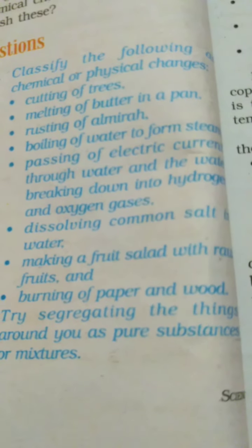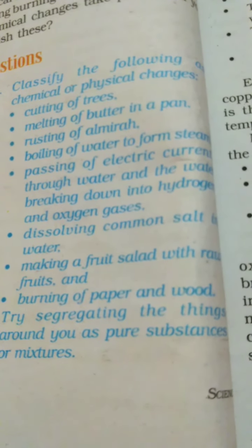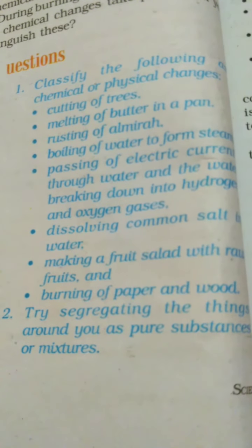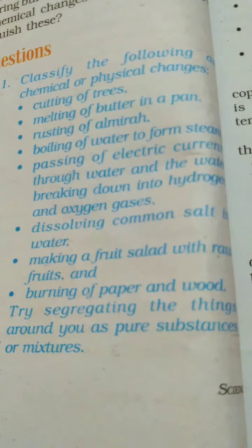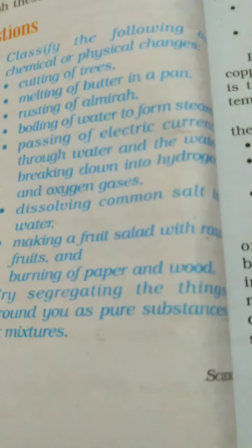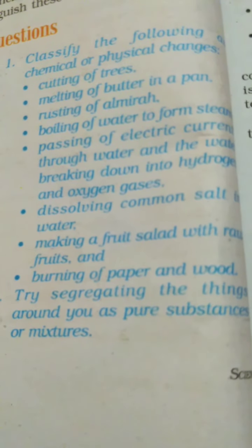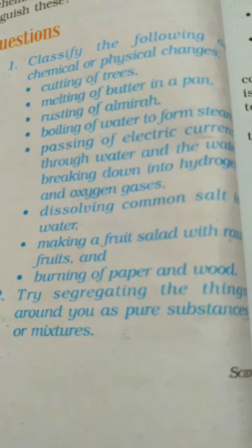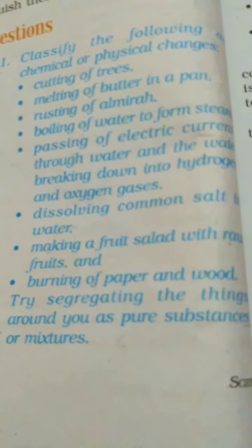Making a fruit salad with raw fruits — it is just a physical change because fruit is still fruit. If you cut mango into smaller pieces, it is only mango; it is not converting into apple or any other fruit. So it is a physical change — a change in shape and size and nothing else. Burning of paper and wood — burning is always a chemical change without any doubt. Whenever you see burning given to identify as physical or chemical, just write it is a chemical change.